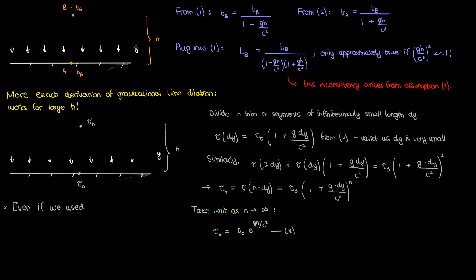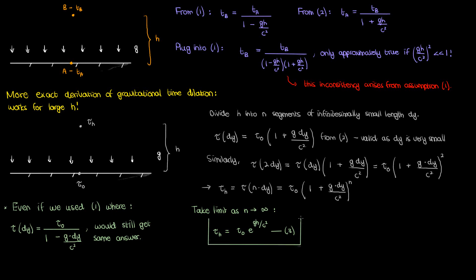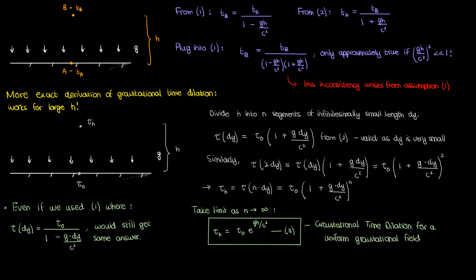Even if equation one were used in the derivation, where tau at dy is related to tau naught by that expression, we would still get the same answer in the limit. So equation three is a more consistent and exact expression for gravitational time dilation in a uniform gravitational field — the time interval observed on the surface is slower compared to the time interval far away from the surface. Actual gravitational fields aren't uniform, so they have their own separate equations for gravitational time dilation, which we'll cover when we discuss the solutions to the Einstein field equations — the topic for the next video.